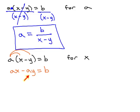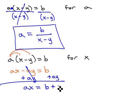We have a negative ay. We can get rid of the negative ay with a positive ay on both sides. The ay subtract out to 0, and ax is equal to, with no like terms, we write b plus ay.